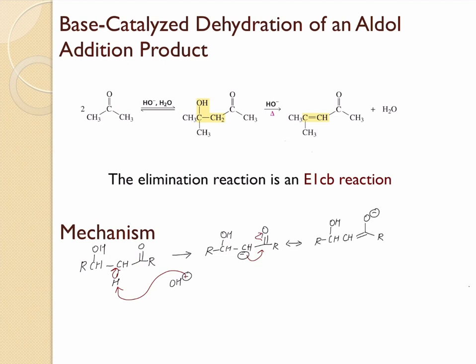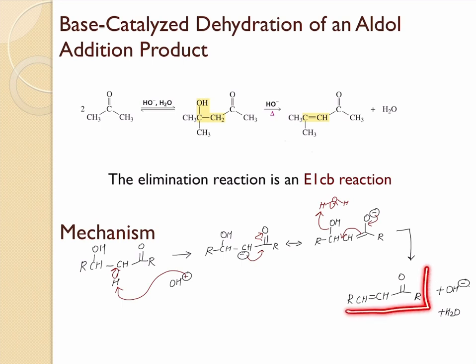In the next step, these electrons push in to form a new double bond between these two carbons, and then the OH gets eliminated — it picks up a hydrogen from a water molecule and gets eliminated. Here is the final product, which is an alpha-beta unsaturated carbonyl compound. This reaction is also called the E1CB reaction, where CB represents conjugate base.